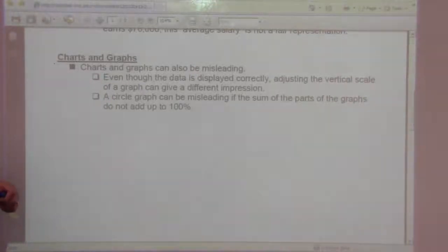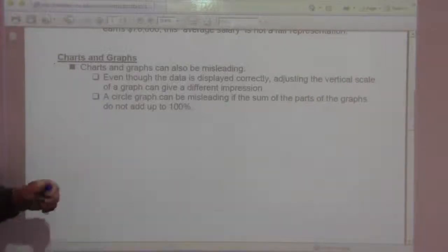Even though the data is displayed correctly, adjusting the vertical scale of a graph can give a different impression. And a circle graph can be misleading if the sum of the parts of the graph do not add up to 100%. Important thing to check out.